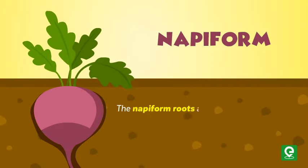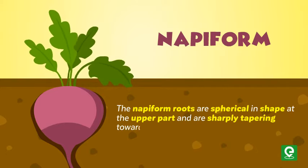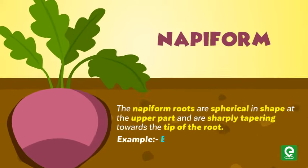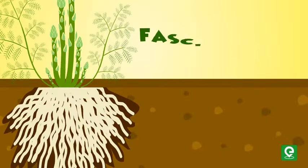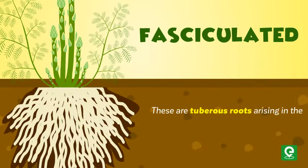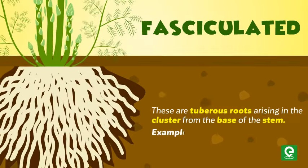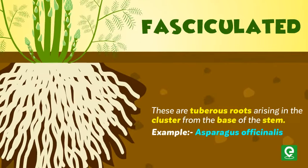Napiform roots are spherical in shape at the upper part and sharply tapering towards the tip of the root. Example: beetroot, Beta vulgaris. Fasciculated roots are tuberous roots arising in a cluster from the base of the stem. Example: Asparagus officinalis.